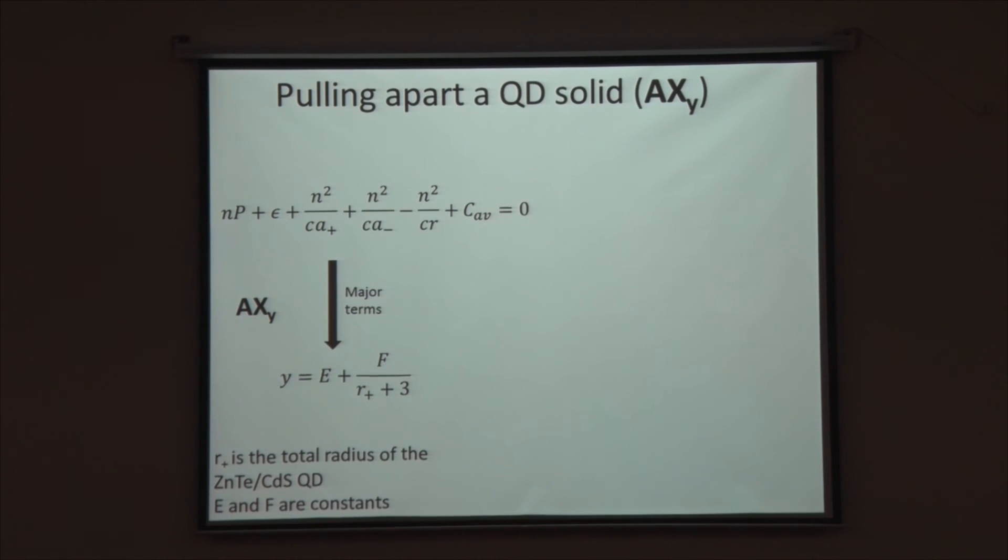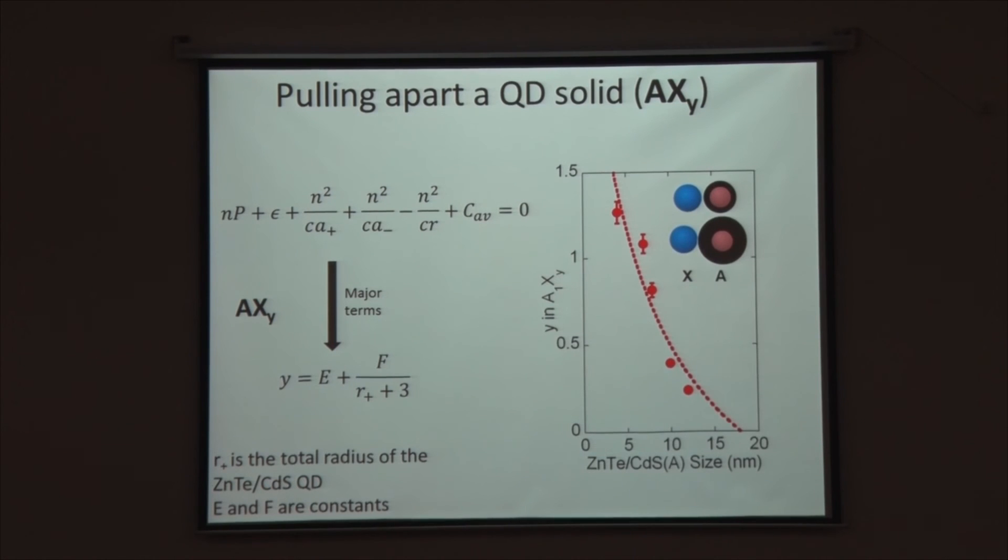What happens if we pull apart a quantum dot solid? In this case something totally different happens. We go to our equation and try to make a series of approximations. We find that the stoichiometry, here I define that as Y where I am making a compound which is AXY, A and X are quantum dots. I find that Y is actually a function of separation, meaning the more I pull apart the quantum dots, the more the stoichiometry will change because this is now a purely classical effect. The nice thing is I can change it from a thought experiment into a real experiment. I could never do this with a real ionic solid but I can with a quantum dot solid.